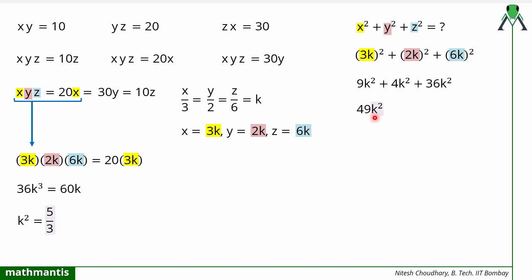Now I will put the value of k² here so it can be easily simplified to find the value of x² + y² + z². This will become 49 × 5/3, which is 245/3.